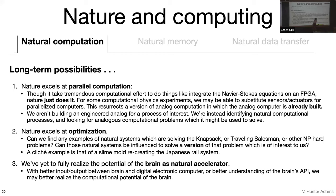Nature is also really good at optimization. Could we engage in this computational naturalism effort and go find examples of natural systems that are solving things like the knapsack problem, or the traveling salesman problem, or other NP-hard problems? And can we gently influence those natural systems to solve a version of that problem that's of interest to us? There's a famous example of researchers in Japan using a slime mold to optimize a rail system. The slime mold, properly set up, came up with exactly the same layout and optimized for the same kinds of things. I also don't think we've fully realized the potential of the brain as a natural accelerator—with better understanding of the brain's API and higher bandwidth communication, we'll better use our brains as accelerators for computers.